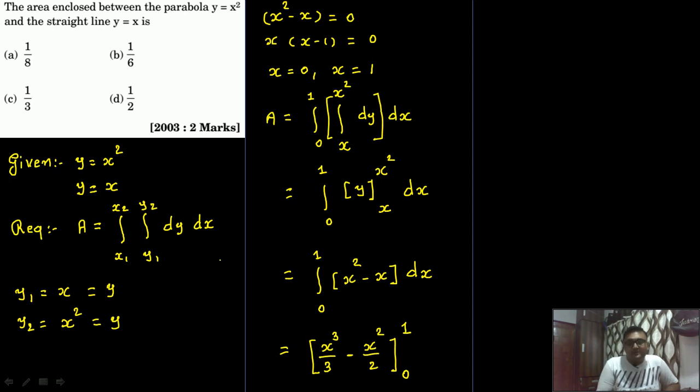So what will be our final answer? That is 1 cube divided by 3 minus 1 square divided by 2. And minus will become 0. It is equal to 1 cube - where we put the value of 1 in place of x, we got this: 1 cube divided by 3, which means 1 by 3 minus 1 by 2.